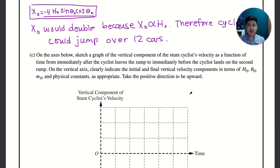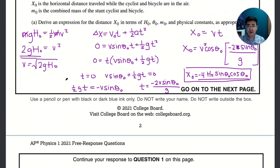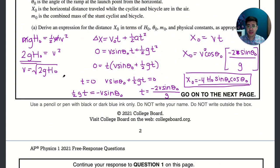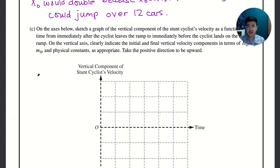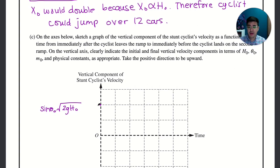On the axis below, sketch a graph of the vertical component of the stunt cyclist's velocity as a function of time immediately after the cyclist leaves the ramp and immediately before the cyclist lands on the second ramp. On the vertical axis clearly indicate the initial and final velocity components in terms of h₀, theta₀, and m₀. We know that the starting component was v sine theta, but we can't use v so we have to use this term over here. Instead of v sine theta it's square root 2gh naught. So the starting velocity is square root 2gh naught, and then we'll put this sine theta in front, and these match.